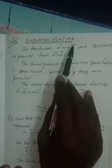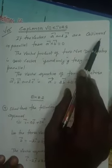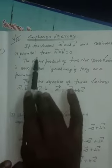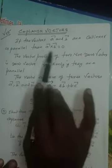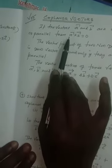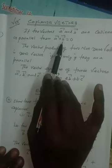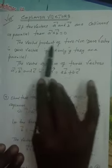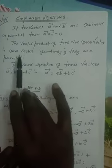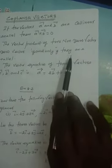Today's topic is coplanar vectors. If vectors A and B are collinear or parallel vectors, then A cross B is equal to zero. This cross product is computed using a determinant with rows I, J, K; components of A; and components of B. The vector product of two non-zero vectors is the zero vector if and only if they are parallel.